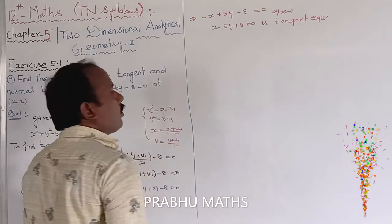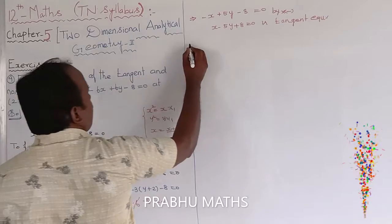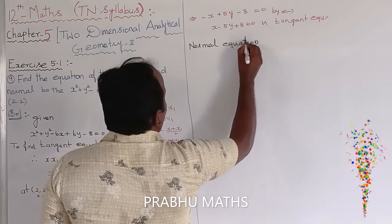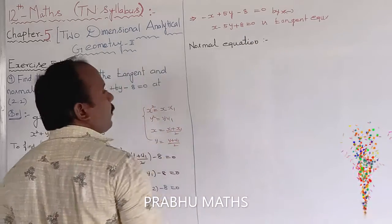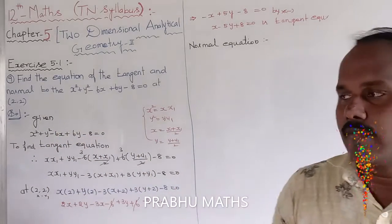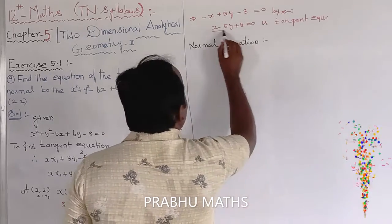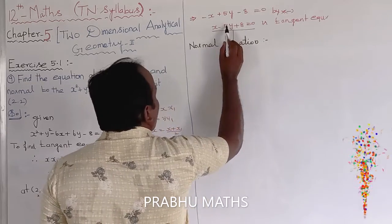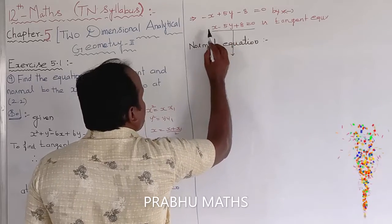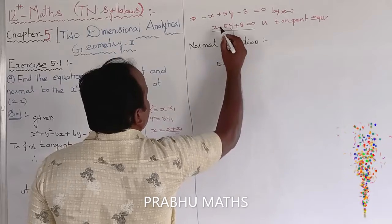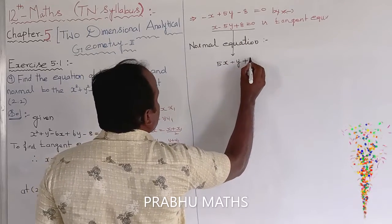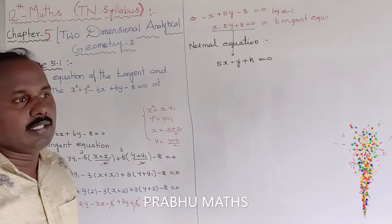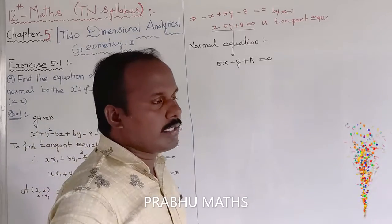Next, find the normal equation. The normal is perpendicular to the tangent. For the perpendicular equation, swap the coefficients of x and y and change the sign: the coefficient of x becomes the multiplier of y and vice versa, giving 5x + y + k = 0. That is the normal equation, since tangent and normal are always at 90 degrees.